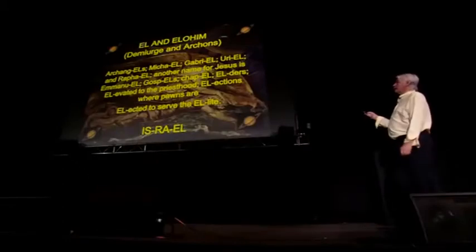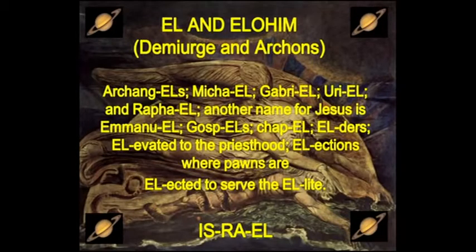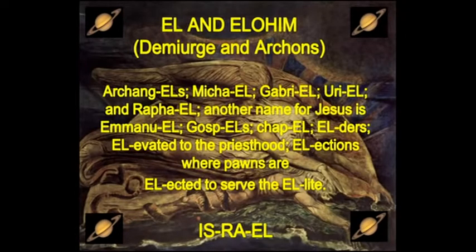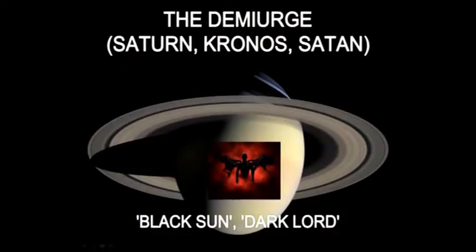The god El, the Hebrew god El, was their god of Saturn. So El and Elohim are the Demiurge and Archons, I would suggest. We have archangels: Michael, Gabriel, Uriel, Raphael; another name for Jesus is Emmanuel. We have the gospels, chapel, elders, elevation to the priesthood, elections — where pawns are elected to serve the elite. We have Isis, Ra, El — all names relating to Saturn.